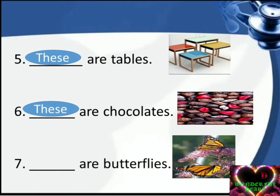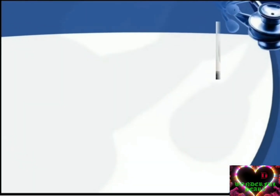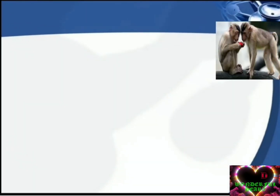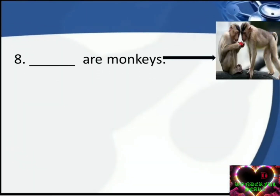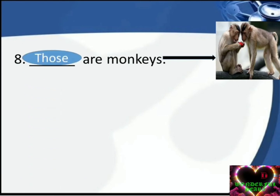Number seven: dash are butterflies. Answer is: These are butterflies. Number eight: dash are monkeys. Answer is: Those are monkeys.